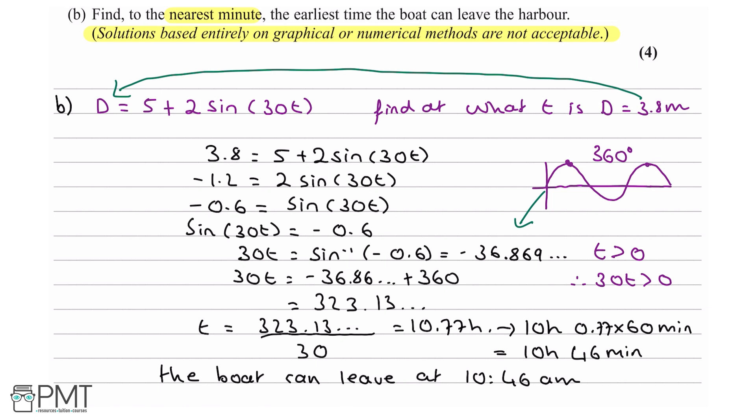As for the marks for this question, you get your first mark for getting that 3.8 equals 5 plus 2 sine 30t and getting all the way down to sine 30t equals minus 0.6. So this entire section will get you your first mark. Your second mark comes from knowing you need to add 360 to your value for 30t so that you get a valid answer for t, so not negative. Your third mark comes from getting that t is 10.77 hours. And your fourth mark comes from getting a time of either 10:46 a.m. or 10:47 a.m.